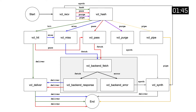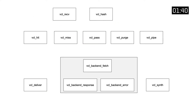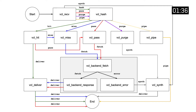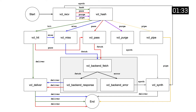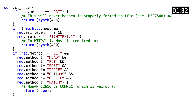The finite state machine displayed here in this diagram contains a collection of states that represents the VCL subroutines that contain the built-in VCL code. There are also some actions involved that allow transitions from one state to the other. Here's an example of some built-in VCL code for the VCL receive subroutine that is executed when a request is received.